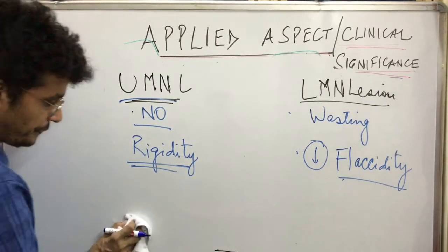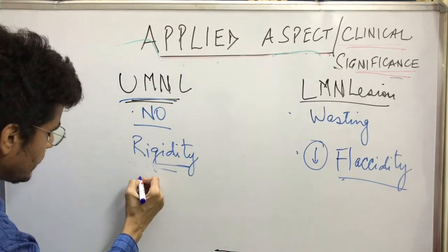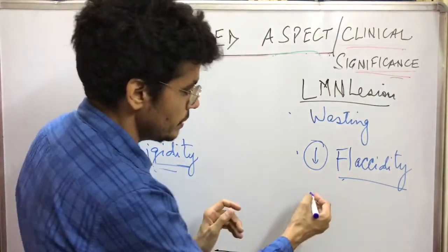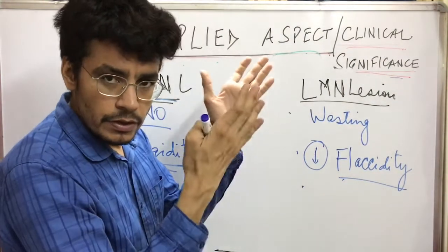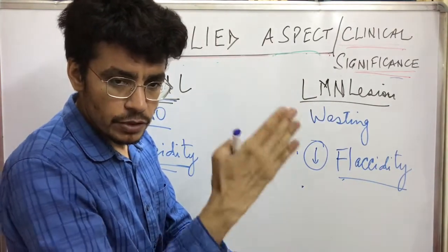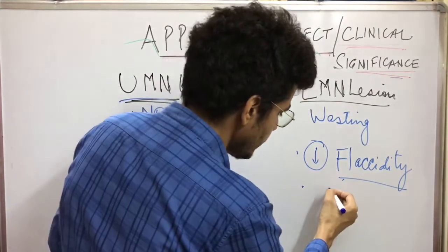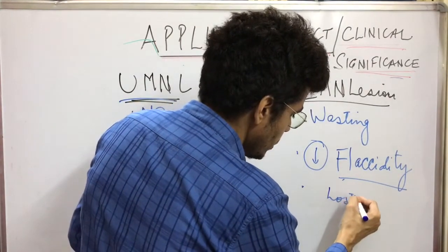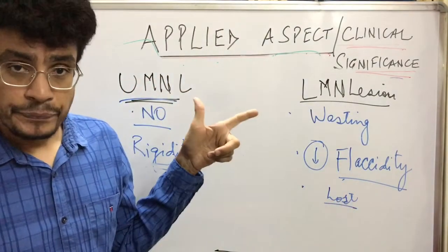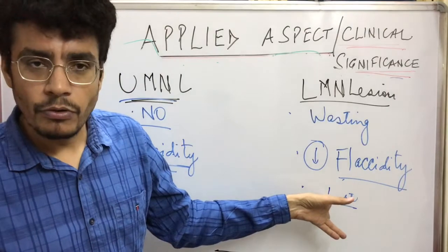What about reflexes? In lower motor neuron lesion, reflexes will be lost because the effector organ is the muscle and the final neuron is the lower motor neuron. If we cut the lower motor neuron, there won't be any contractions. There are two types of reflexes: superficial and deep. Both will be lost in lower motor neuron lesion.